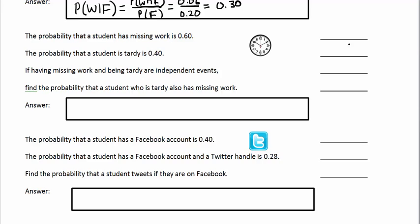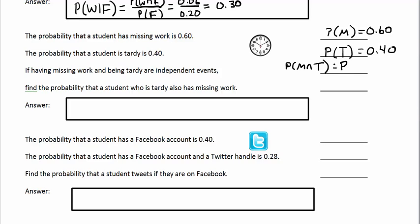The probability that a student has missing work is 0.60, P(M) = 0.60. The probability that a student is tardy is 40%, P(T) = 0.40. If having missing work and being tardy are independent events, we know from the independent events formula that P(M and T) = P(M) × P(T). 'And' means multiply, especially in the case of independent events — that formula is automatically true.